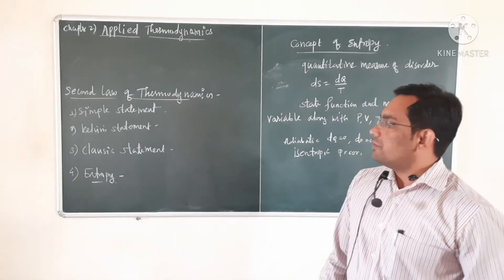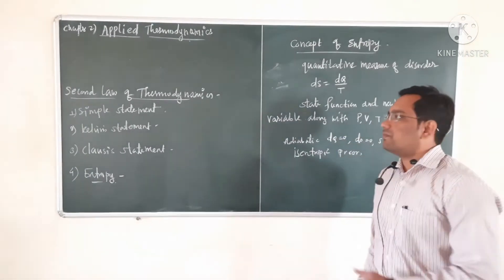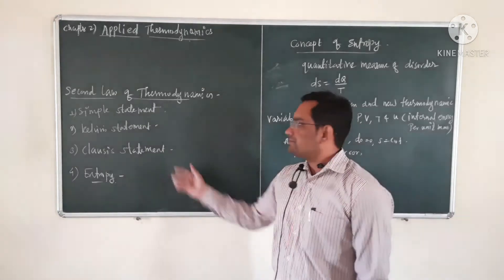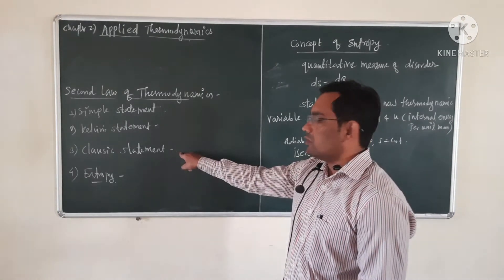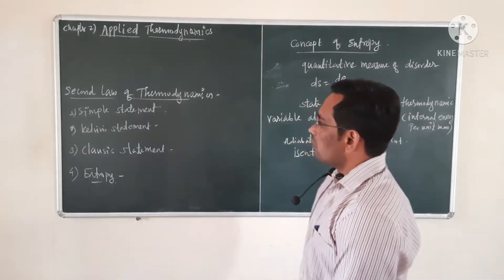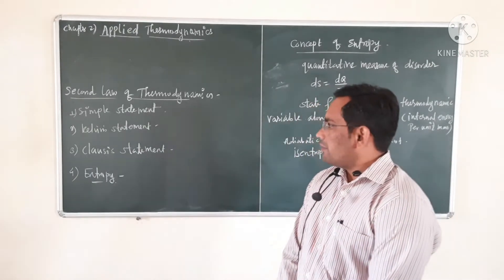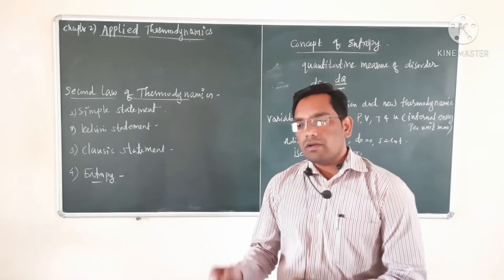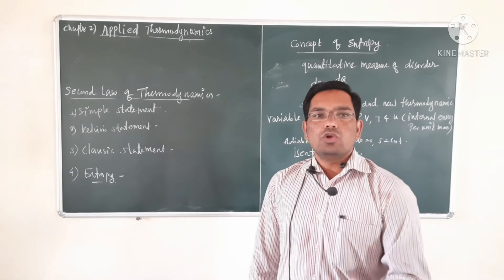For the second law of thermodynamics, we can state it in four different statements. In an exam, if you are asked to write down the second law, you can write any one of these four statements: the simple statement, Kelvin's statement, Clausius' statement, and the statement in terms of entropy. The simple statement is: the second law of thermodynamics states that heat cannot flow from a cold body to a hot body — heat always flows from a body at higher temperature to a body at lower temperature.